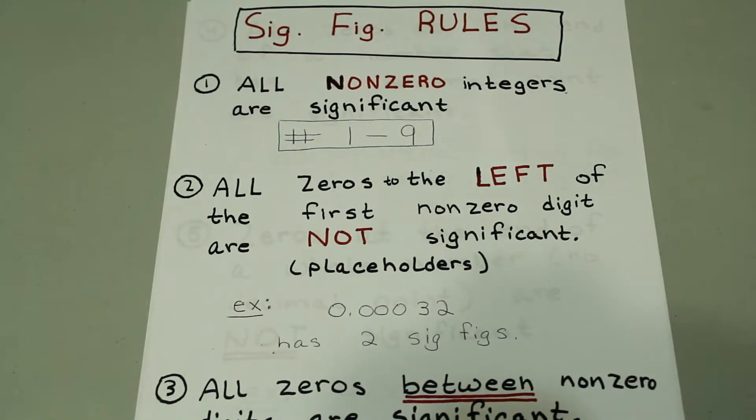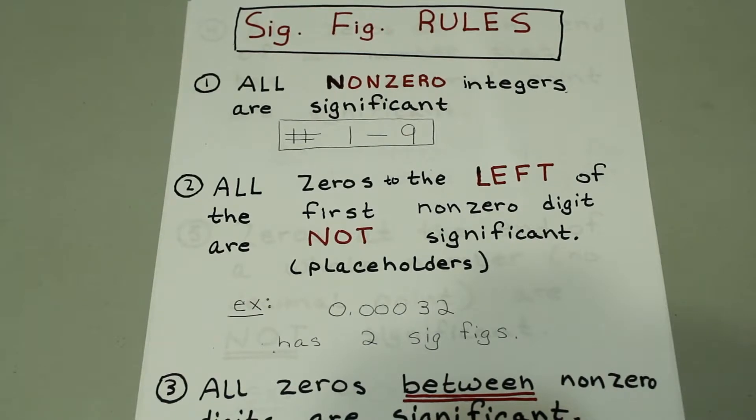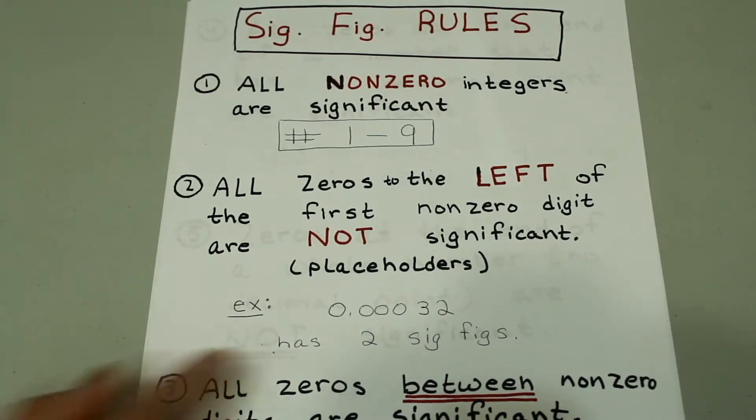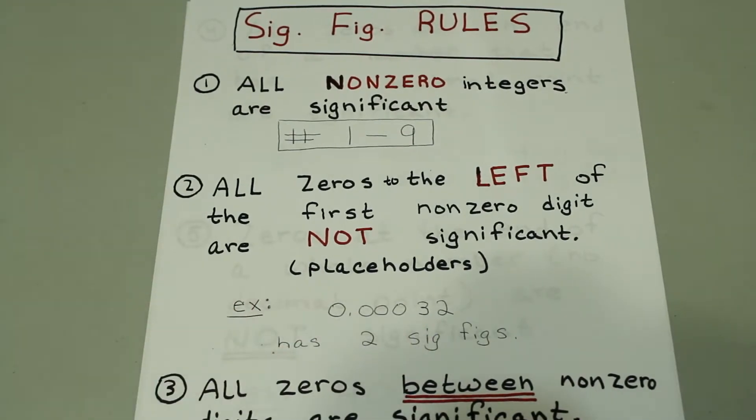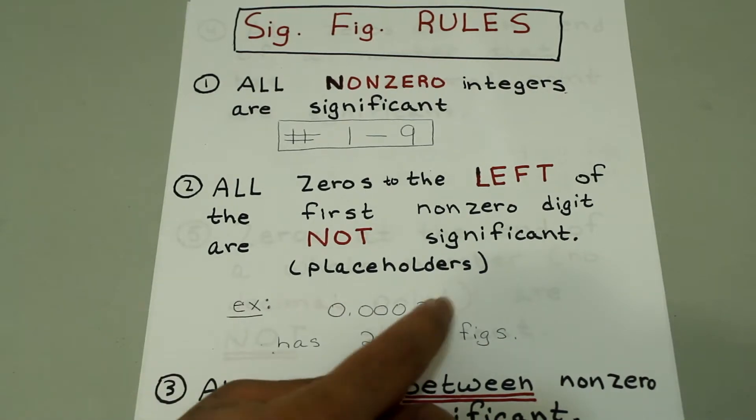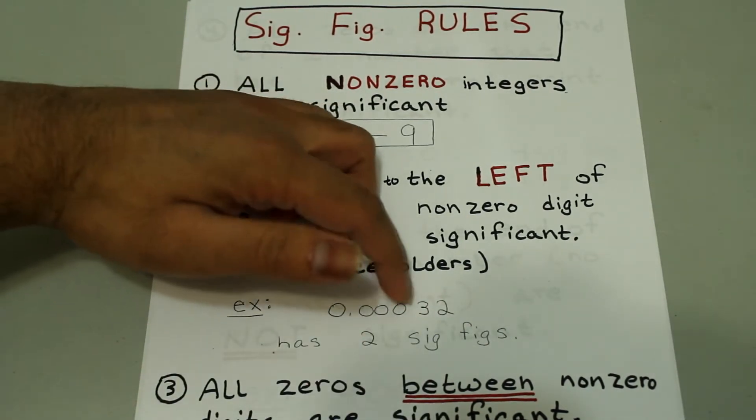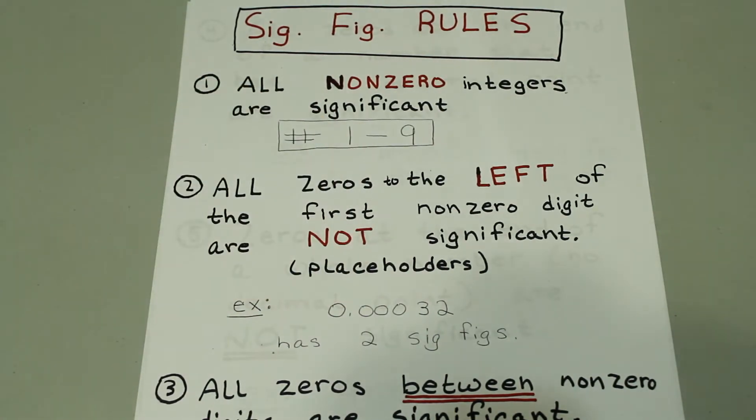All zeros to the left of the first non-zero digit are not significant. They're simply just placeholders. So for example, 0.00032 only has two significant figures. That would be the three and the two. They're non-zero integers and anything to the left of that are not significant.